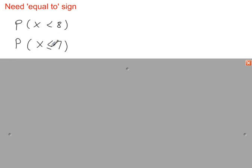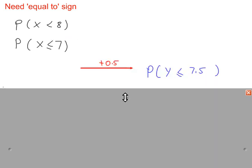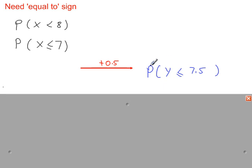And now we have the equal sign in here. And less than or equal to means we need to add a half for the continuity correction. So we work out the probability of less than or equal to 7.5 in the normal distribution.